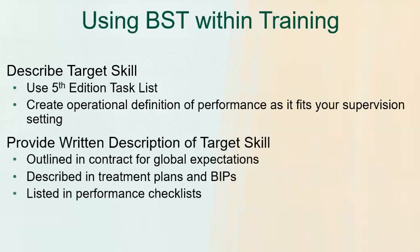So what does that look like? First of all, we want to describe the target skill. This is where we're going to use the fifth edition task list and create some operational definitions of the performance as it fits within the supervision setting. For example, token economy — if I'm in a home setting, here's how that would look; if I'm in a school setting, here's what that is going to look like — so that we can check that box from the fifth edition task list.